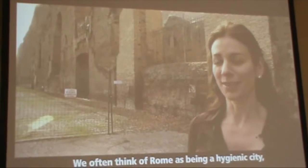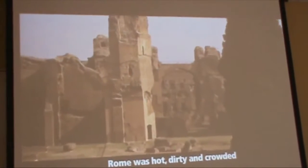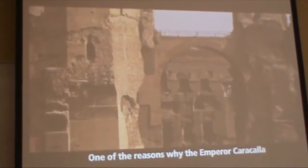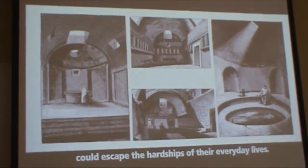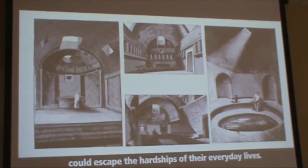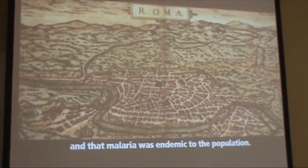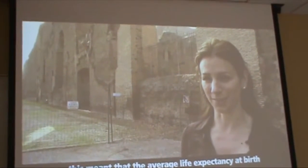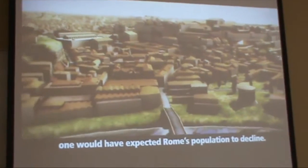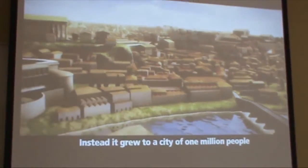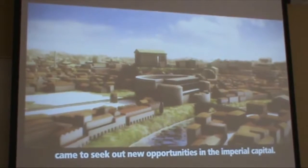We often think of Rome as a hygienic city thanks to baths and aqueducts, but in fact Rome was hot, dirty, and crowded, with rampant disease. Emperor Caracalla built baths so the urban populace could escape everyday hardships. Rome was built over a swamp and malaria was endemic, with average life expectancy at birth of only 20 years. Yet Rome grew to a city of one million people in the first century A.D., as immigrants sought new opportunities.